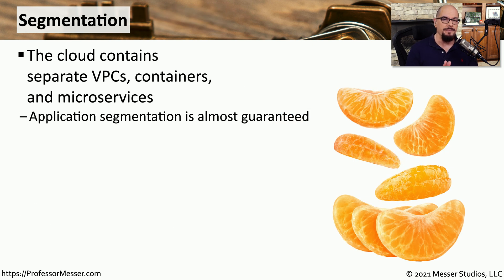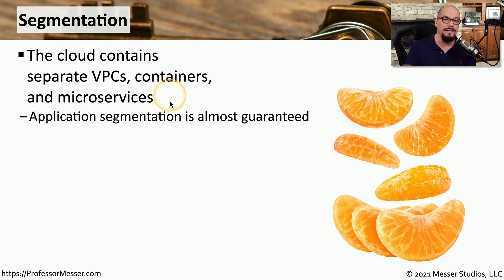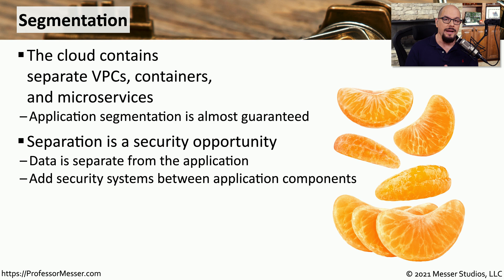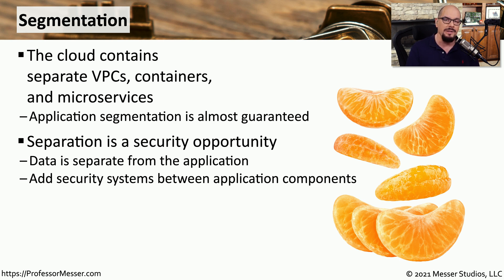We use public and private subnets to create segmentation of your application and data. An application instance might run separate virtual private clouds, different containers, and separate microservices for the applications you're running, which creates opportunities to provide segmentation of the data and manage how that data flows between different segments. For example, an application front end may be user-accessible, but communication to a back-end database can be entirely on a private network, so users can't directly access the database server — only your application server has access to it. This adds additional security between components and maintains privacy naturally built into your infrastructure.